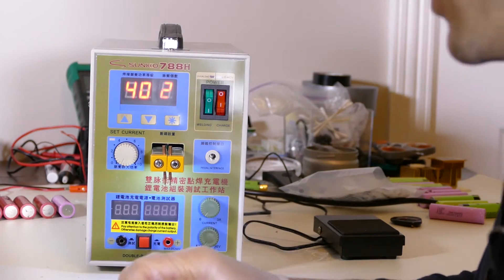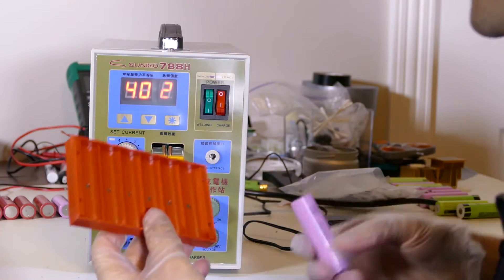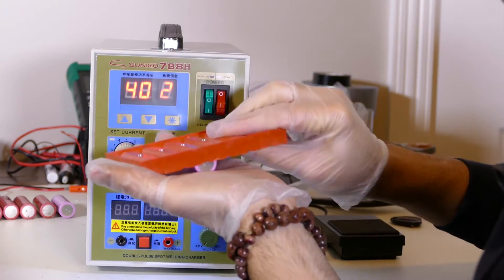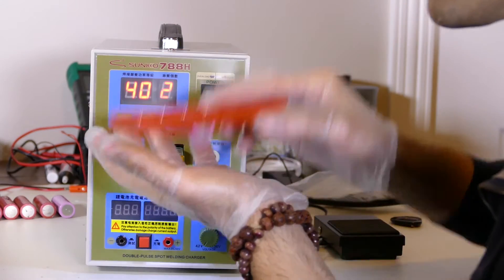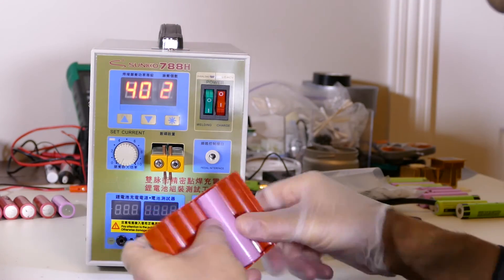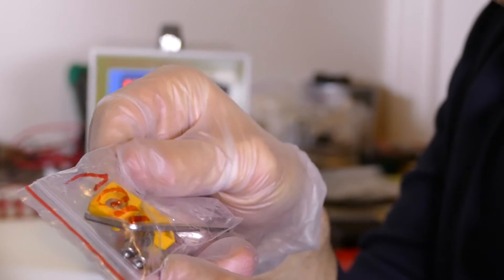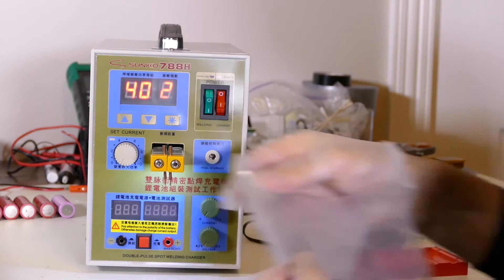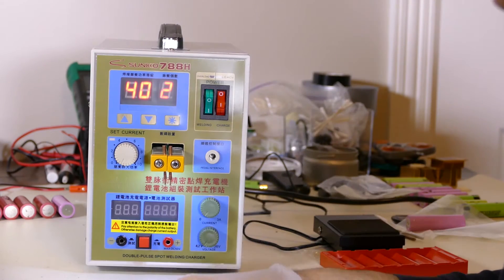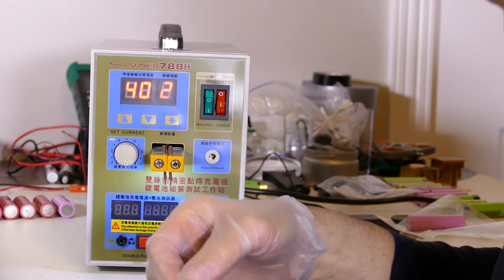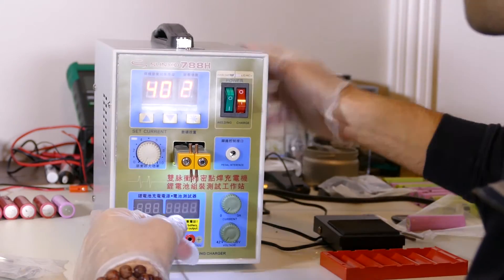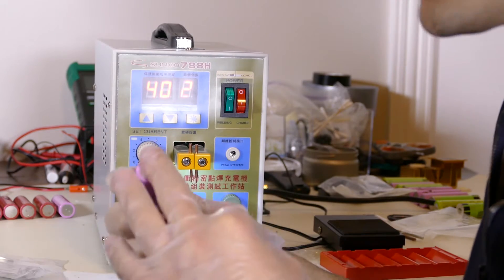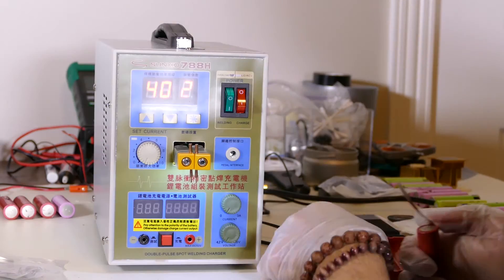Along with the welder came this battery holder - these are magnetized. So if you put an 18650 in here, it keeps it straight. Comes with additional heads, an allen key and a couple extra fuses. Also came with some nickel strips.